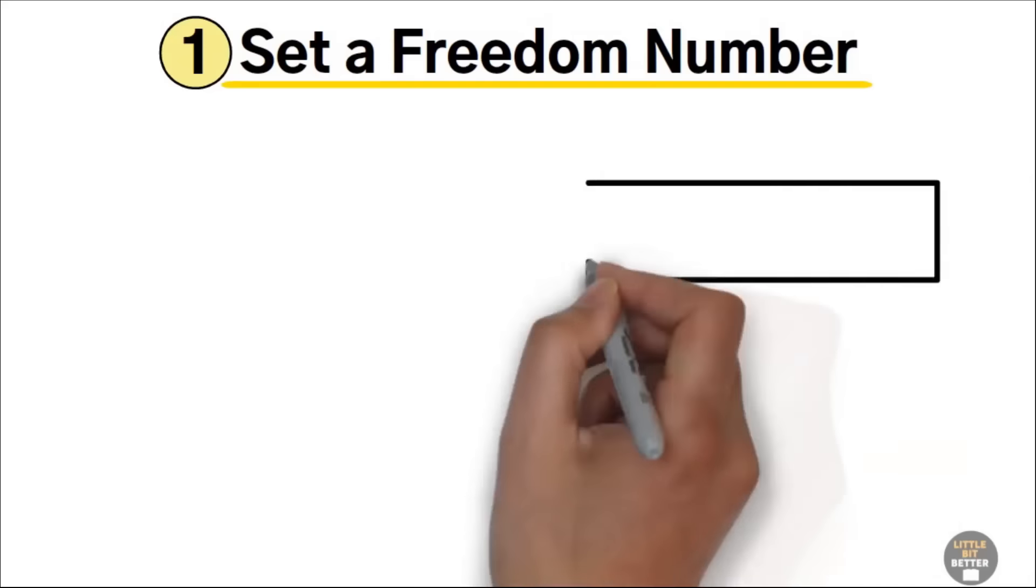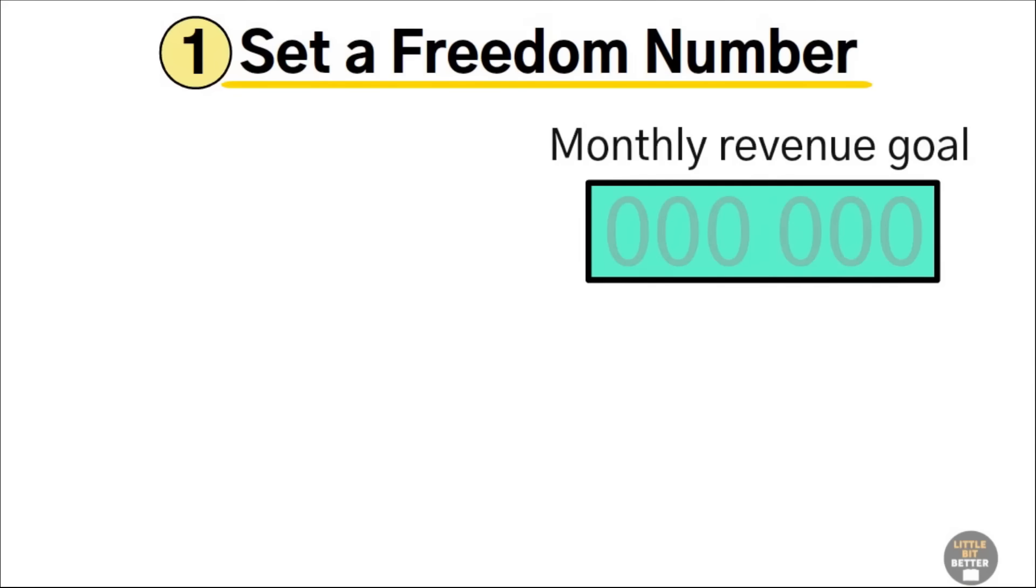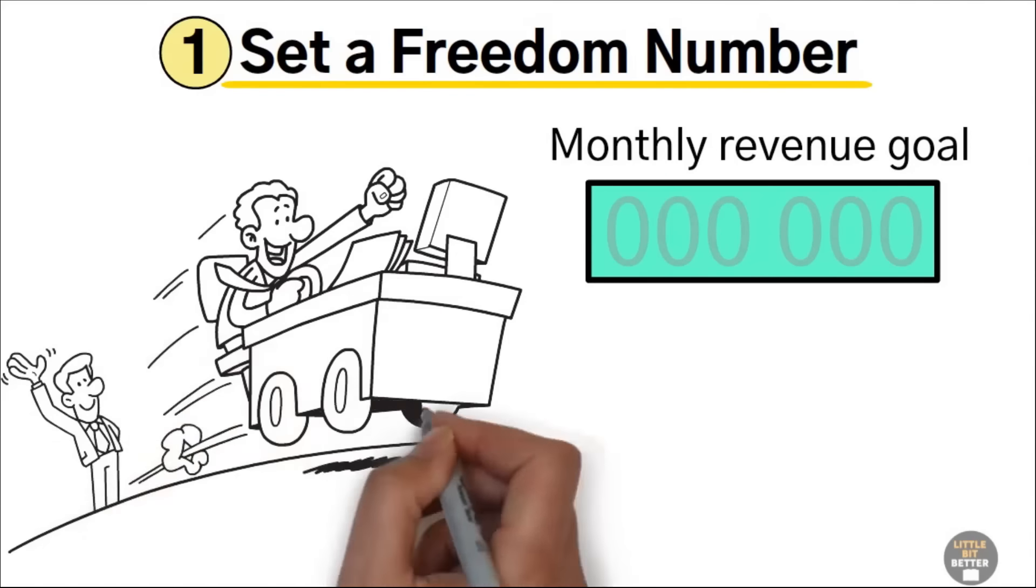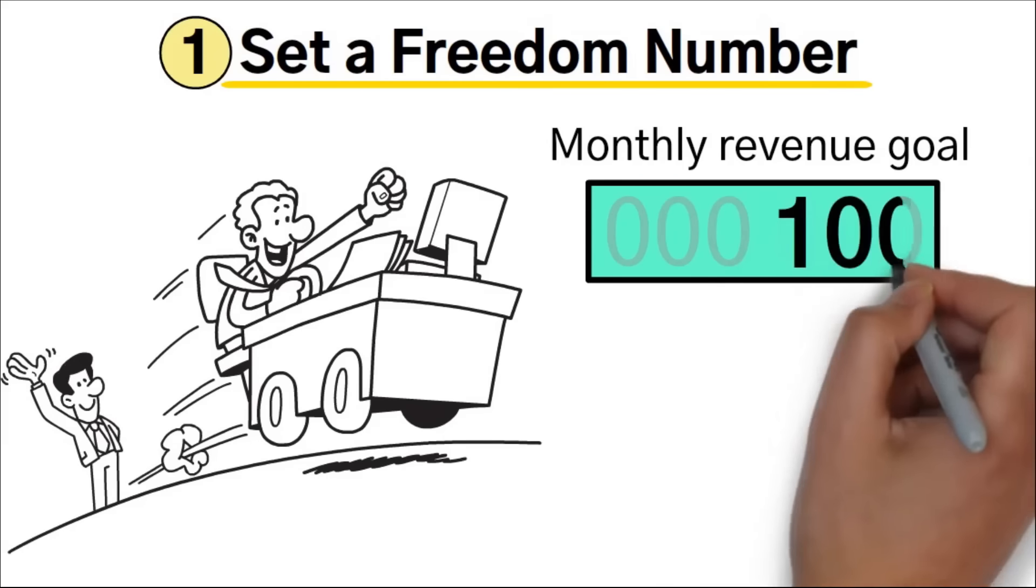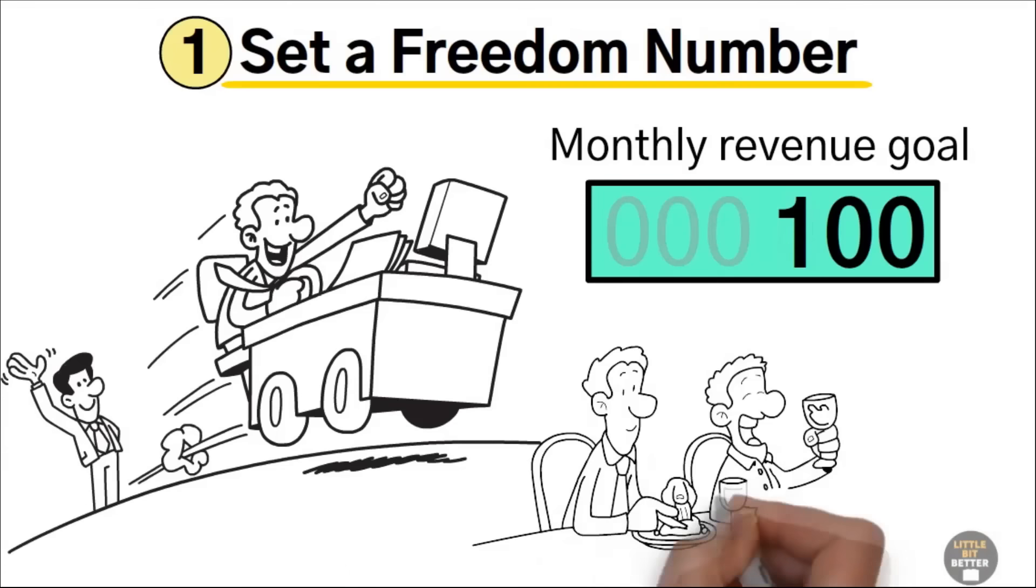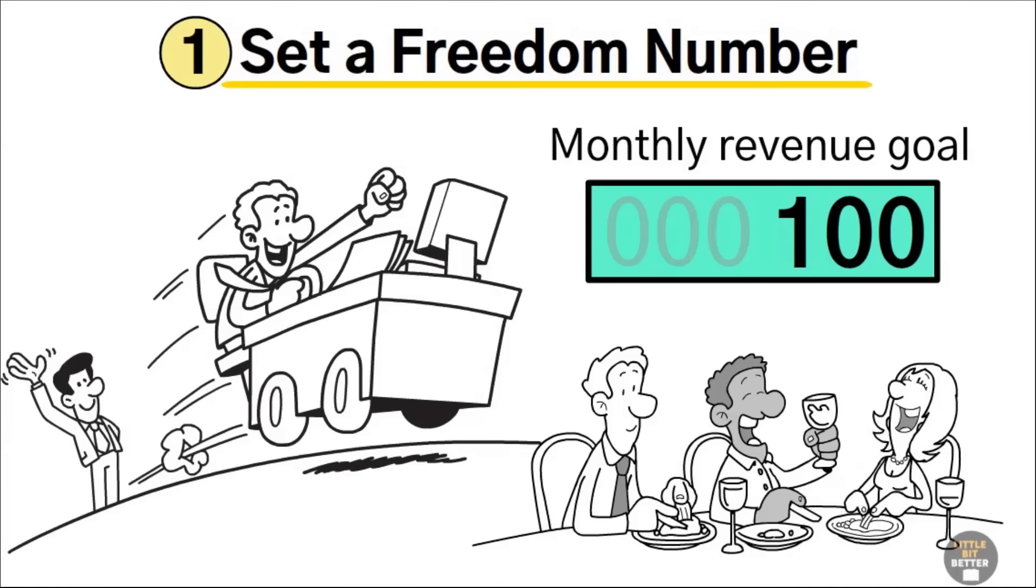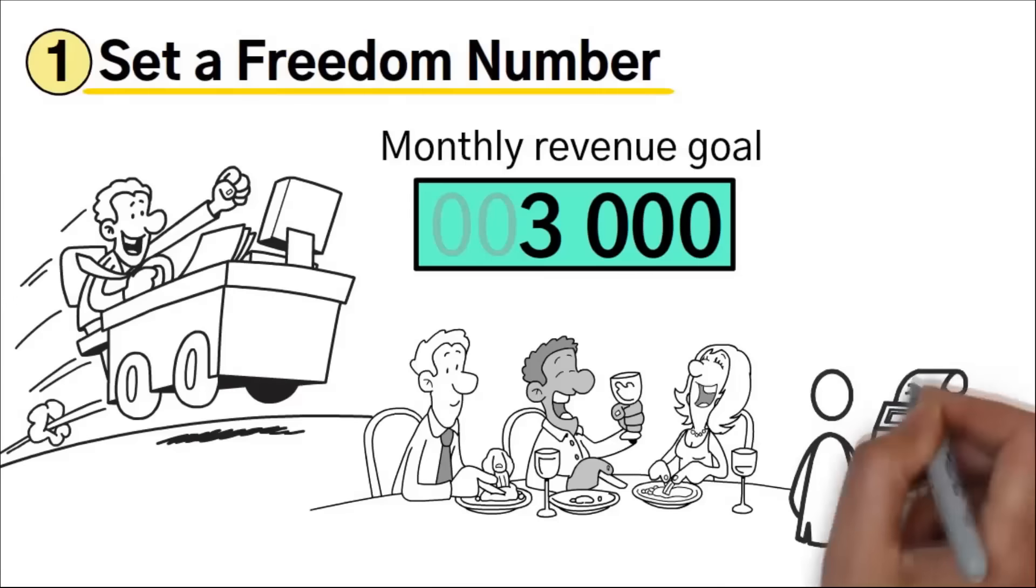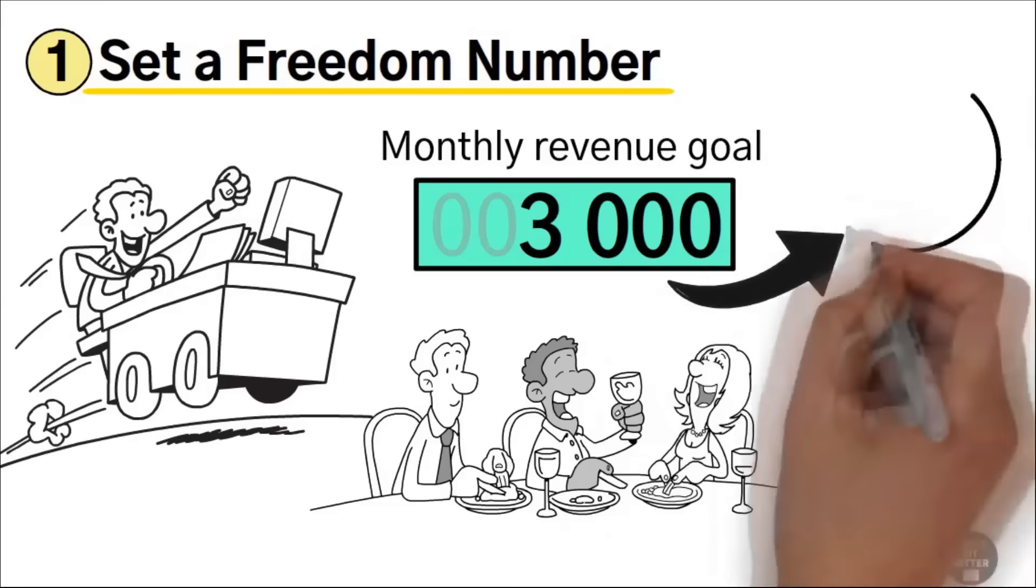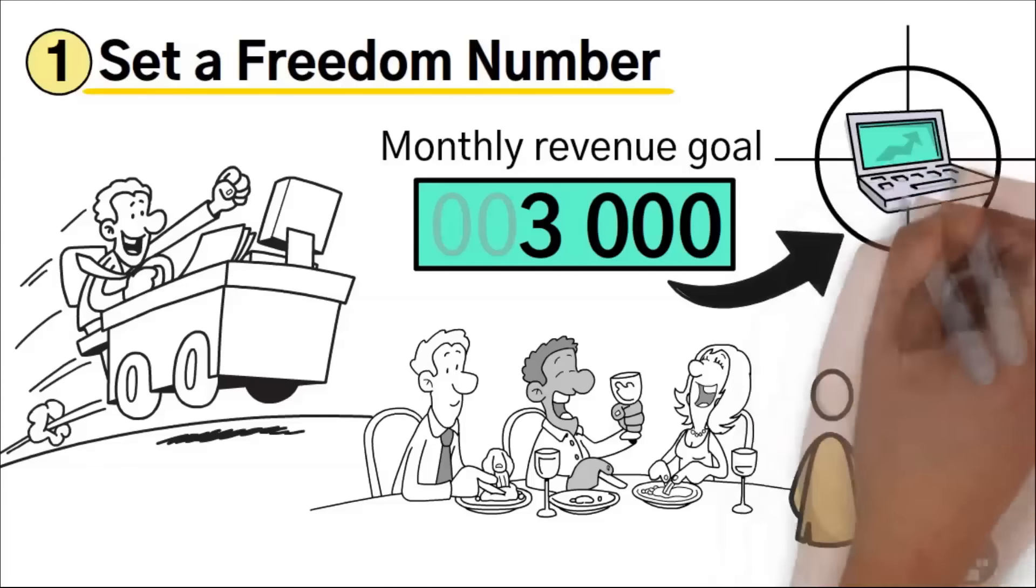One, set a freedom number. A freedom number is a monthly revenue goal. If you make this amount, your dream comes true. For some people, that number is $100. They want to be able to eat a nice meal and have some extra cash. For others, it's $3,000, which covers their monthly expenses. By having a freedom number, you have one clear goal to chase after for your new business.